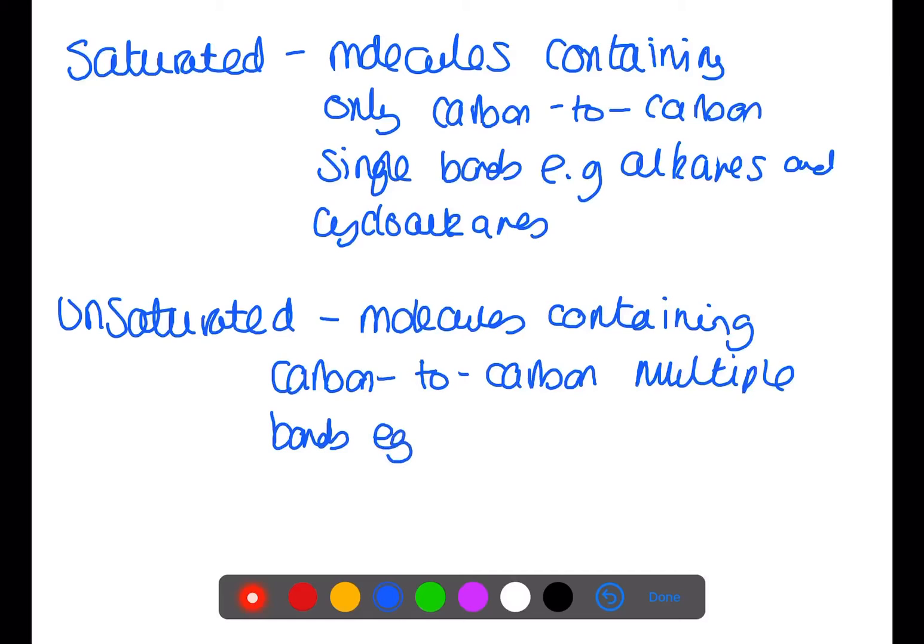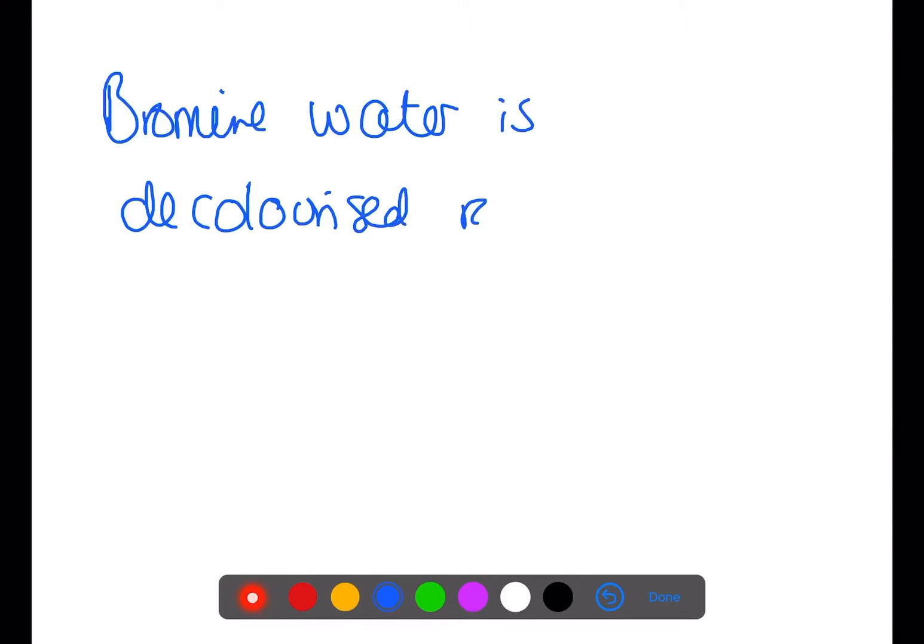To be able to tell apart saturated and unsaturated molecules, we test them with bromine water. Bromine water is decolorized rapidly by unsaturated compounds.